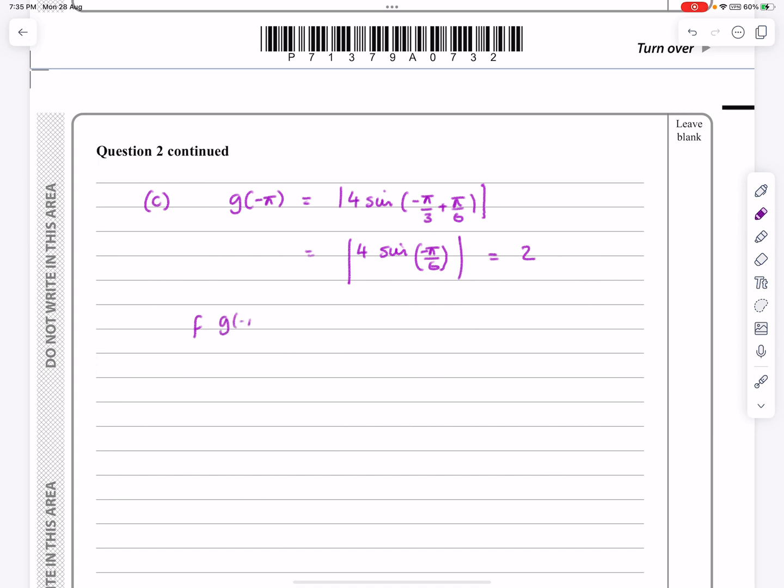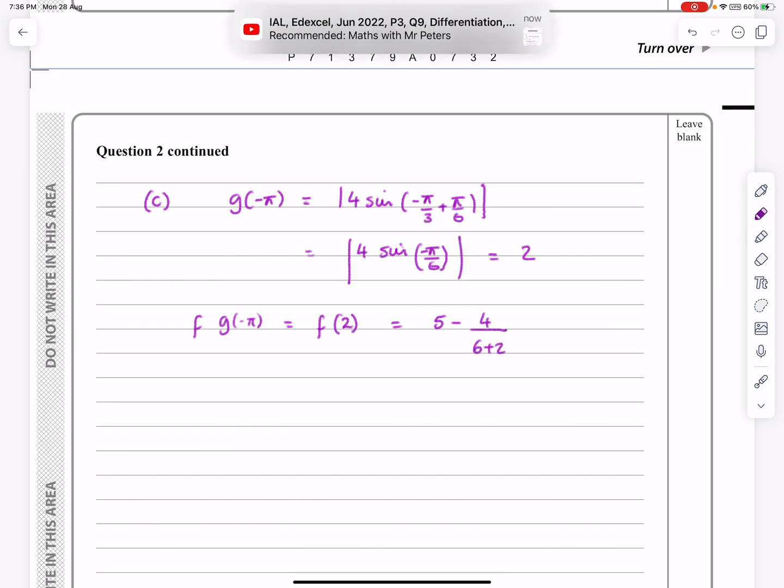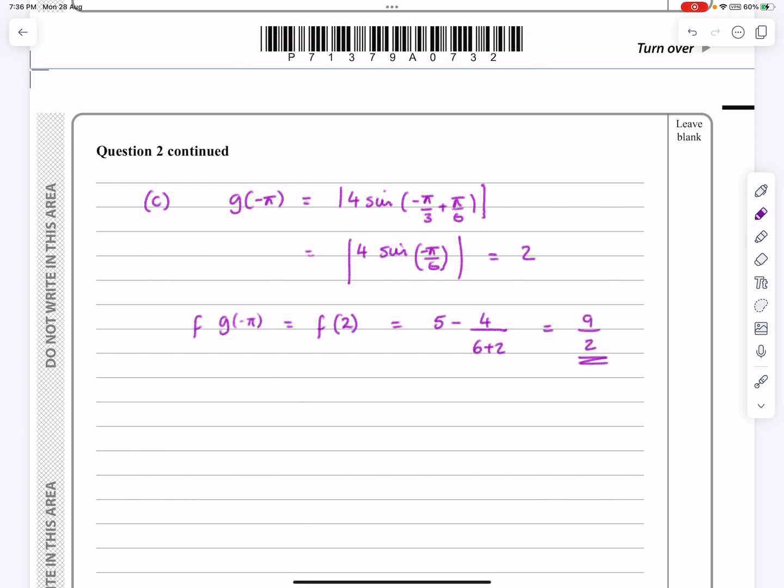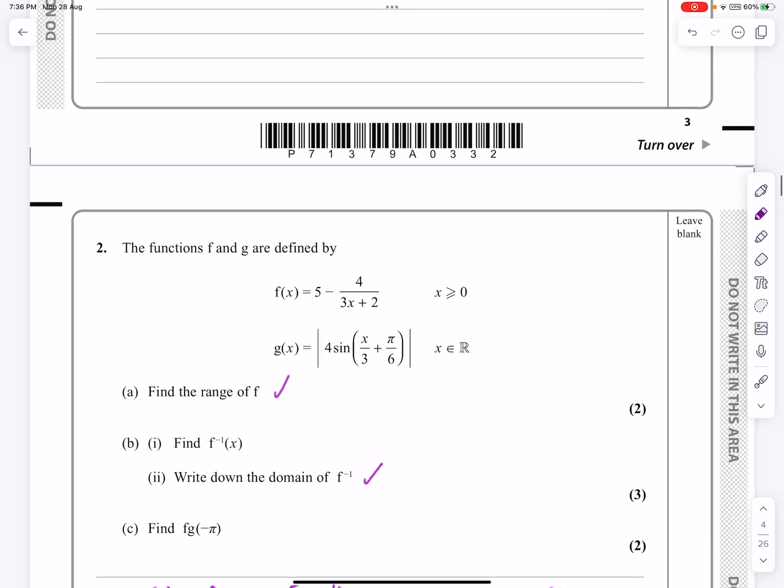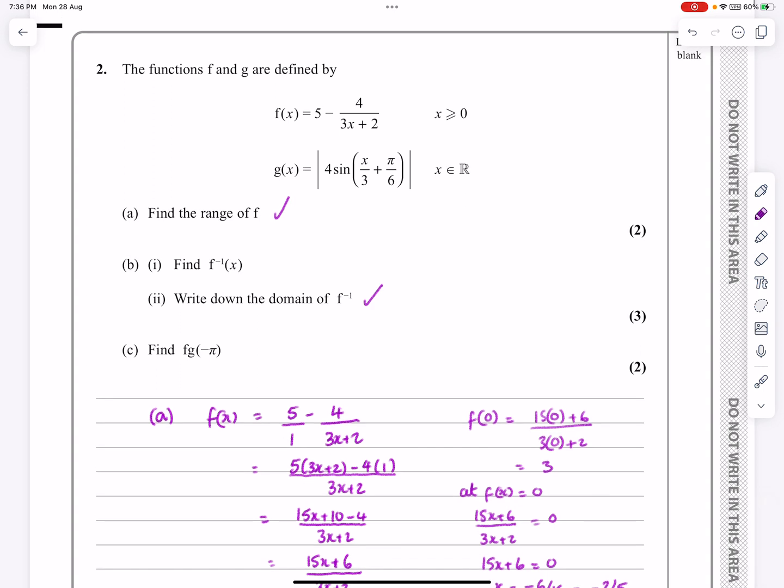So f(g(-π)) then is f(2) because that's what we got for g(-π). f(2) is 5 minus, just put 2 in, 4 over 6 plus 2. Tidy that up, do it on the calculator, it's been a long video, the answer works out to be equal to 9 over 2. So forgive that went on quite long, but there's quite a few teaching points in there. Hopefully all those bits made sense. You would very much shorten that for the 7 marks available.